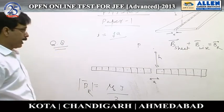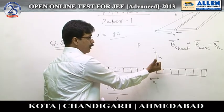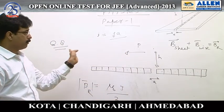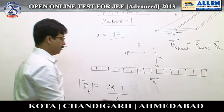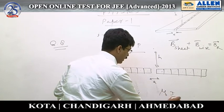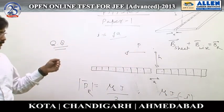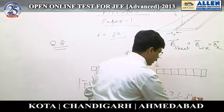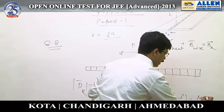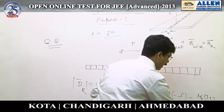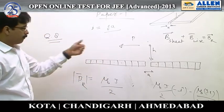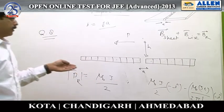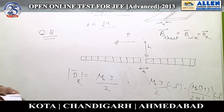As seen from the diagram, the current is outward, meaning the contribution due to the sheet is towards the left, which is minus i-cap. Since from this contribution we have to subtract the contribution of the wire, the field of the sheet is this. The contribution of the wire alone will be μ₀I, where the current carried by the wire is JA divided by 2πh, and the direction of the wire's contribution was towards the right. This gives option C.